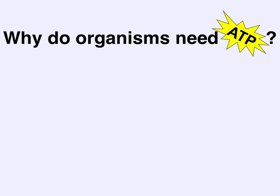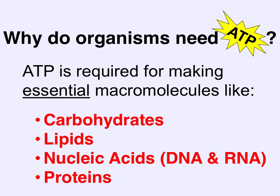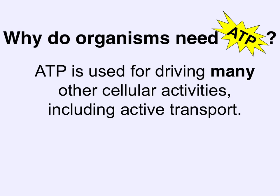And why do organisms need all of this ATP? ATP is required for making essential molecules like carbohydrates, lipids, nucleic acids, and proteins — those macromolecules of life. Without the usable energy stored in ATP, our cells cannot generate these important macromolecules. ATP is also used for driving many other cellular activities, including active transport.